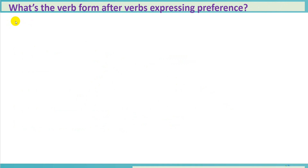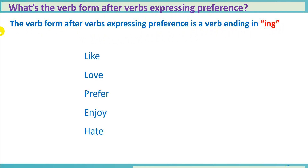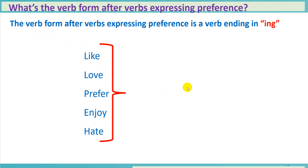Right now, answer the question: what's the word form after verbs expressing preference? It is a verb ending in -ing. We have like, love, refer, enjoy, hate — okay, all of them are followed by a verb ending in -ing.